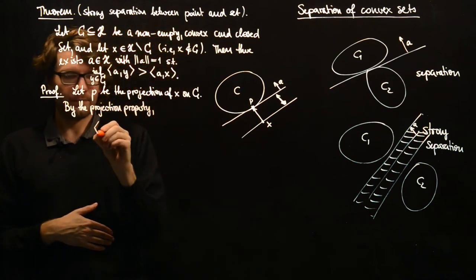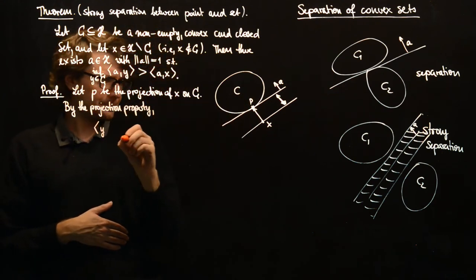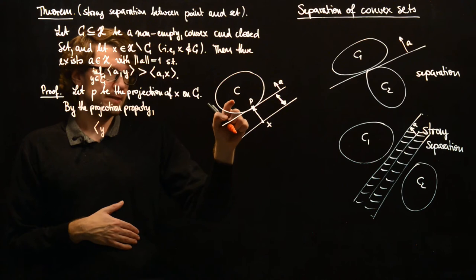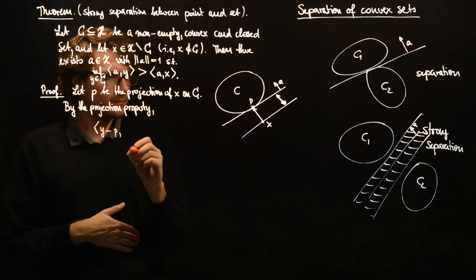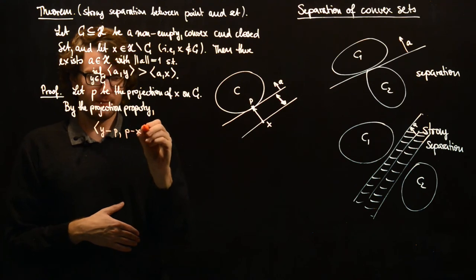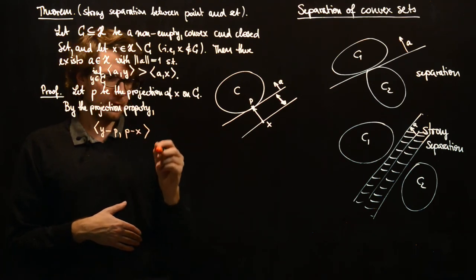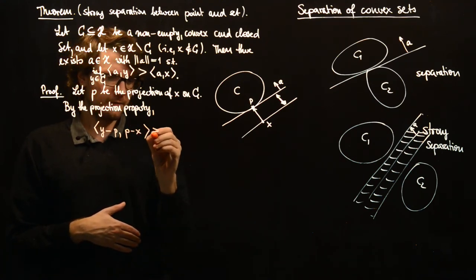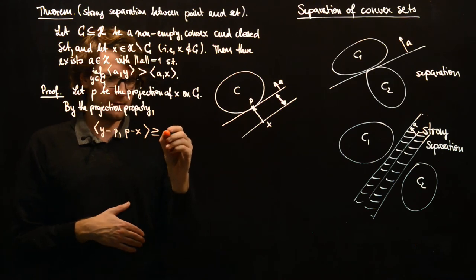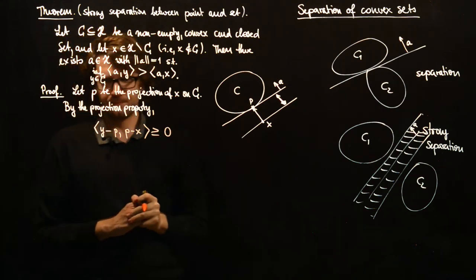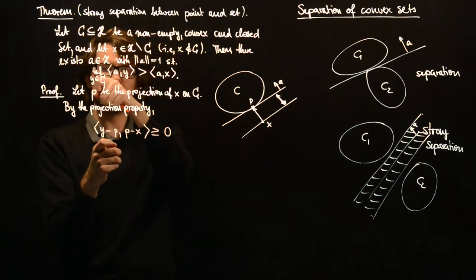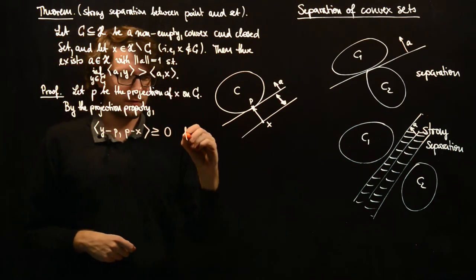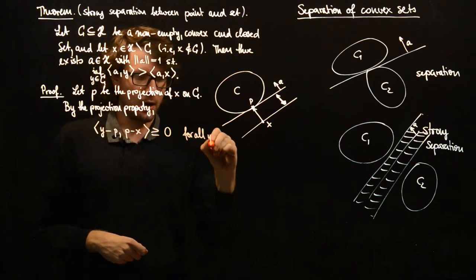So we have, whenever we have Y in the set C, the inner product of Y minus P with P minus X, then we have that this is greater or equal than 0. So this is for all Y in C.